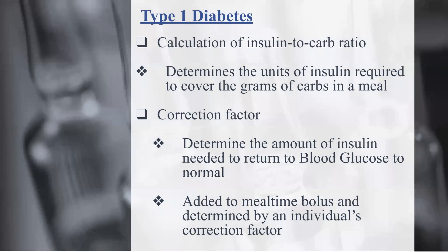To get type 1 diabetes patients to goal, we need to calculate the insulin-to-carb ratio, which determines the units of insulin required to cover the grams of carbs in a meal. We also calculate the correction factor, which determines the amount of insulin needed to return blood glucose to normal. This is added to the mealtime bolus. These questions can be tricky with two, three, or four steps, but they're actually easy.